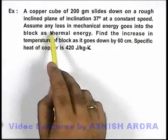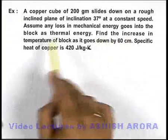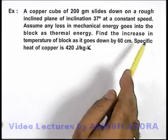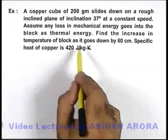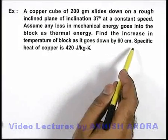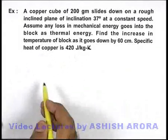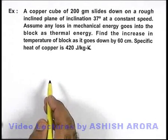We assume any loss in mechanical energy goes into the block as thermal energy, and we need to find the increase in temperature of the block as it goes down by 60 centimeters. We are given the specific heat of copper as 420 J/kg·K.